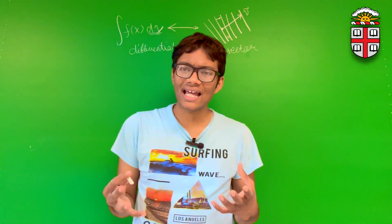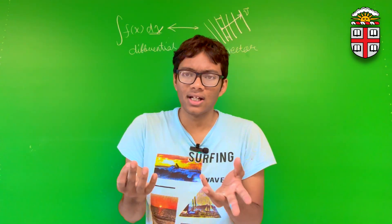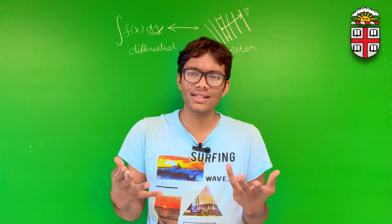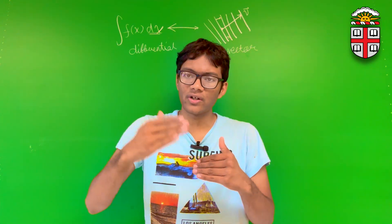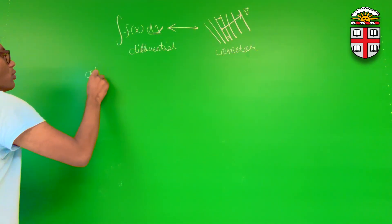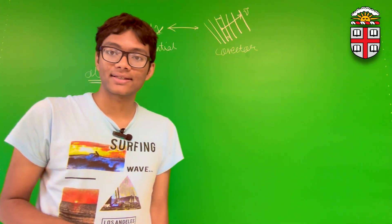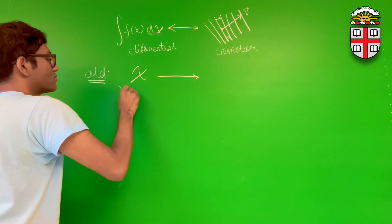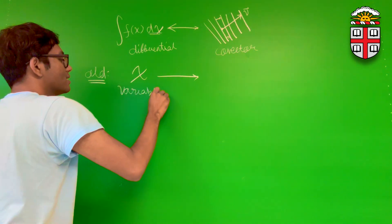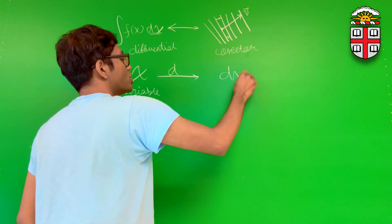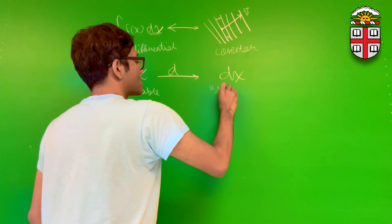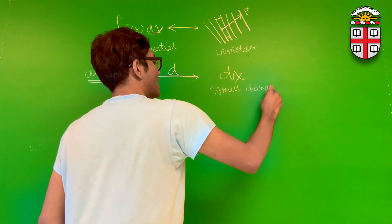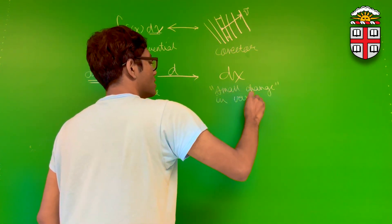How can that possibly be correct? One is a small infinitesimal change in the variable x, and the other one is some kind of a weird bunch of contour lines. Well, the old definition of d — the differential dx — was as follows. If you have a variable x, then applying the d operator to x gives you a small change in that variable, dx. So dx is a small change in the variable x.